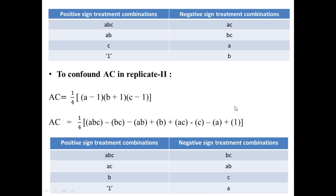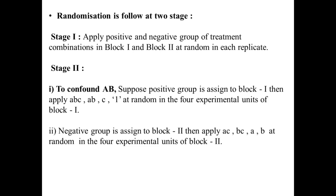These are the two interaction effects confounded partially in replicate 1 and replicate 2. Randomization occurs at two stages. For replicate 1, stage 1 involves randomly assigning the positive and negative groups of treatment combinations to block 1 and block 2. Suppose the positive group is assigned to block 1; then ABC, AB, C, and 1 are applied at random to the four experimental units of block 1.